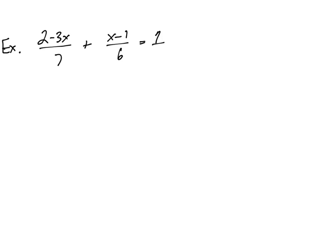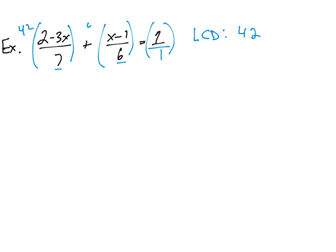In this next example, we want to clear out all the fractions by multiplying by the least common denominator of all the fractions. We have denominators 7, 6, and 1, so the least common denominator is 42. I like to multiply each term by 42. Before multiplying out, I can reduce: 42 divided by 7 is 6, so we get 6 times (2 minus 3x).